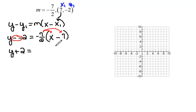So that's, we want to solve it for y eventually. So negative 7 halves times x is negative 7 halves x. Negative 7 halves times negative 7 would be a positive 49 over 2.